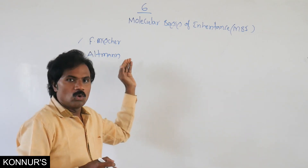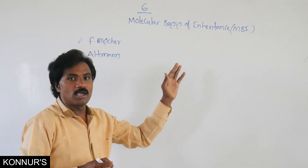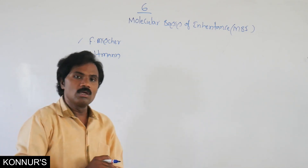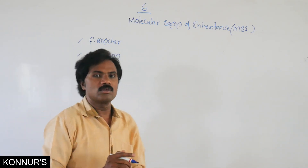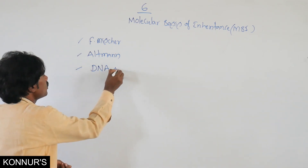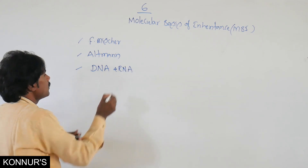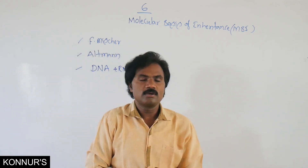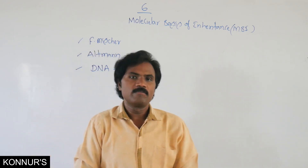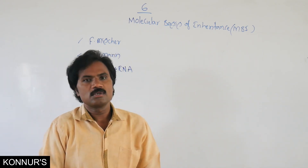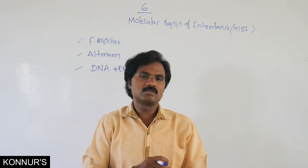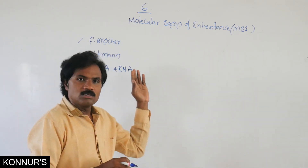Altman put the name 'nucleic acid.' How many nucleic acids are present? There are two nucleic acids — that is DNA as well as RNA. Among these two, which is the genetic material? In most organisms, DNA is the genetic material. In some organisms like viruses, RNA is also the genetic material.